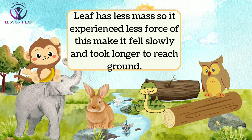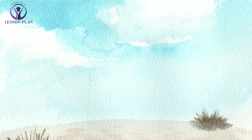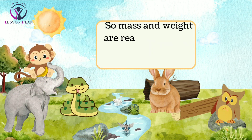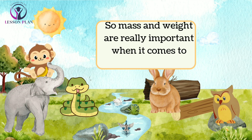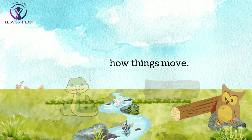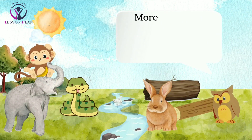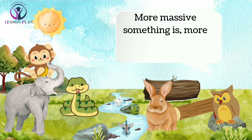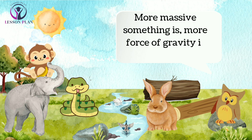Rabbit said, "So mass and weight are really important when it comes to how things move." Owl nodded. "Exactly. The more massive something is, the more force of gravity it experiences and the faster it will fall."